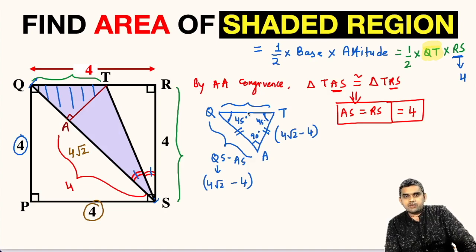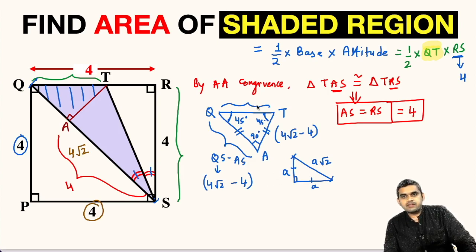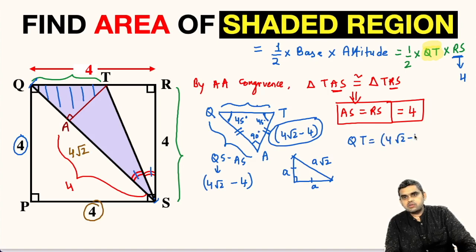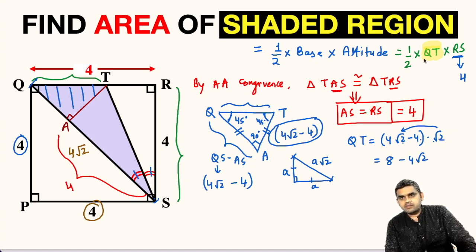Triangle QAT is an isosceles right triangle, and QT is its hypotenuse. For an isosceles right triangle with equal legs of length a, the hypotenuse equals a√2. So QT = (4√2 − 4) × √2 = 4 × 2 − 4√2 = 8 − 4√2.